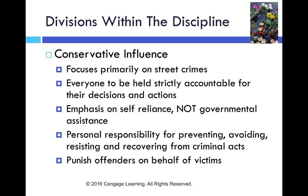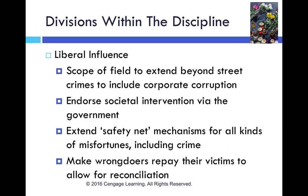Within victimology there's a conservative influence that focuses on street crimes, individual accountability, self-reliance, personal responsibility for avoiding victimization, and punishing offenders on behalf of victims. The more liberal influence extends the field beyond street crimes to include corporate corruption and its far-reaching impact, endorses societal intervention and safety nets for people, and emphasizes making wrongdoers repay their victims.